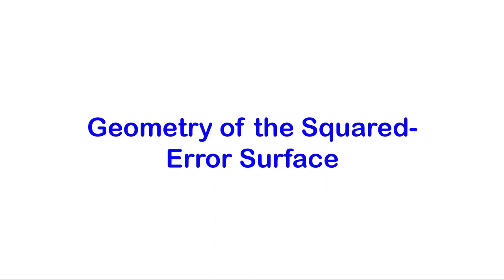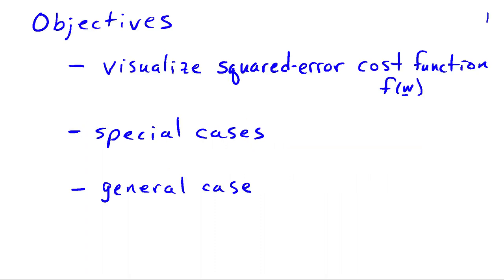We've been studying the solutions to the least squares problem for fitting models to data or building classifiers. In this video, we're going to look at the geometry of the squared error surface, which we're minimizing. Our objectives are to develop a visual representation for the cost function f that we're trying to minimize with respect to w.